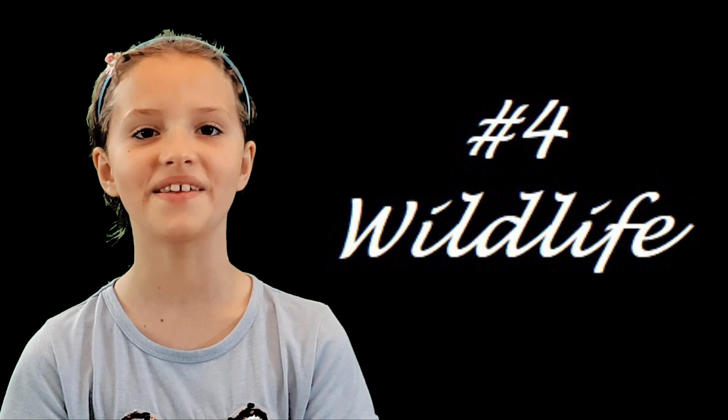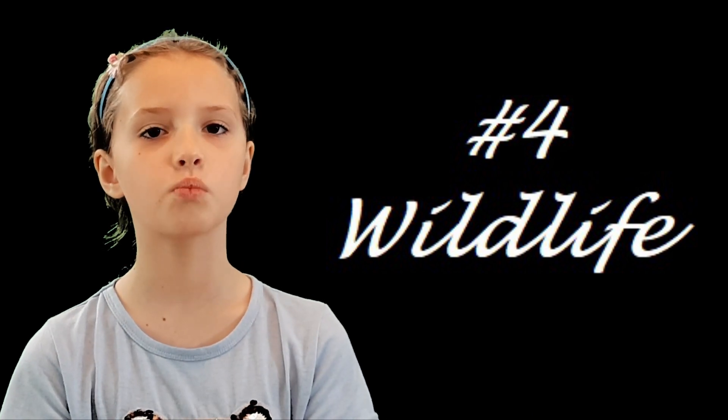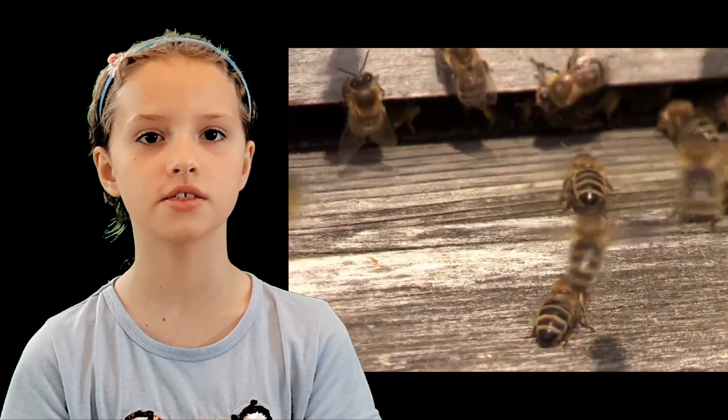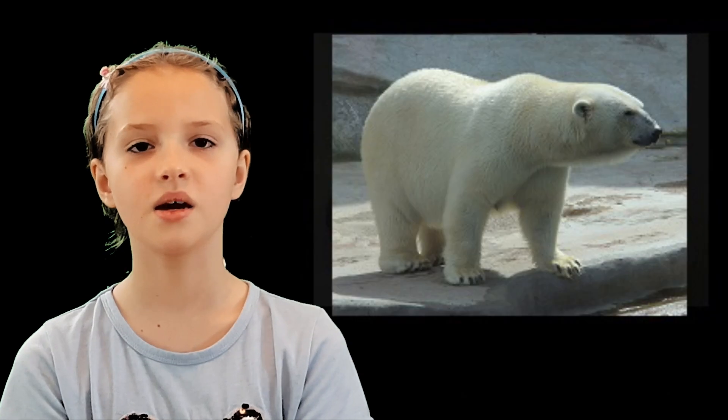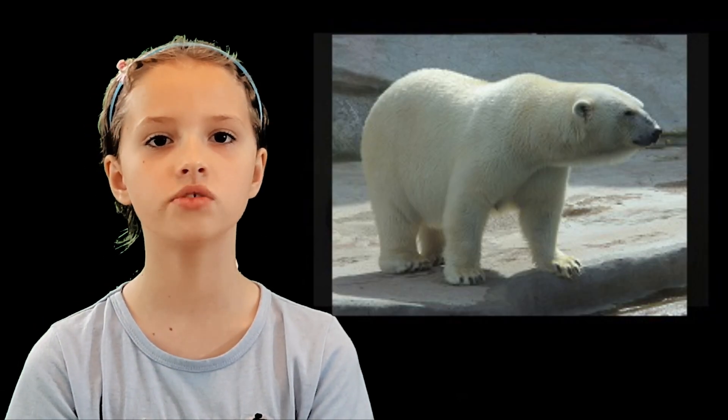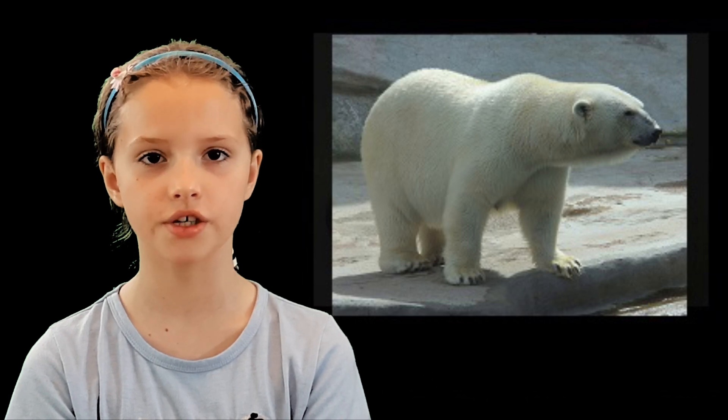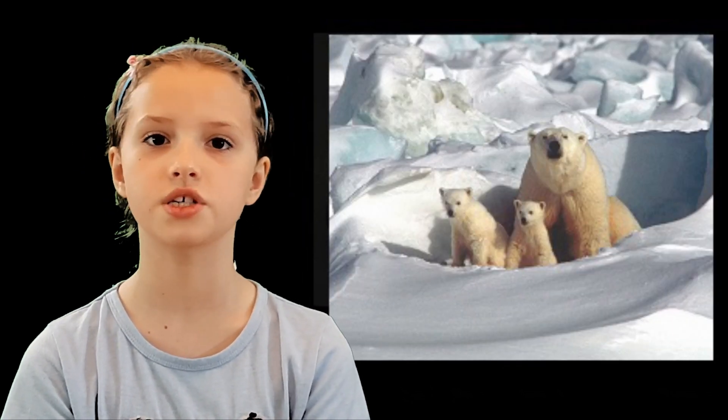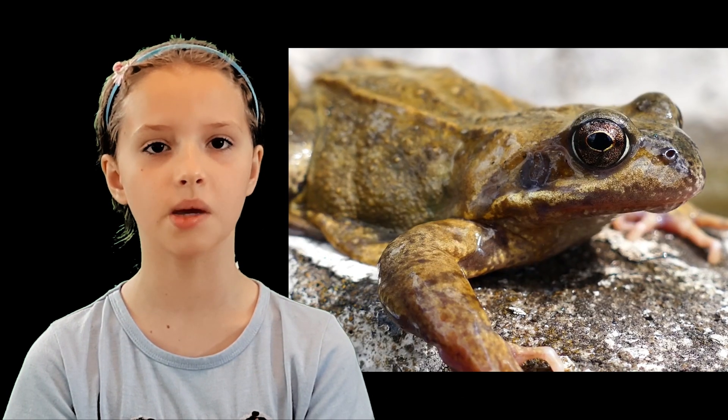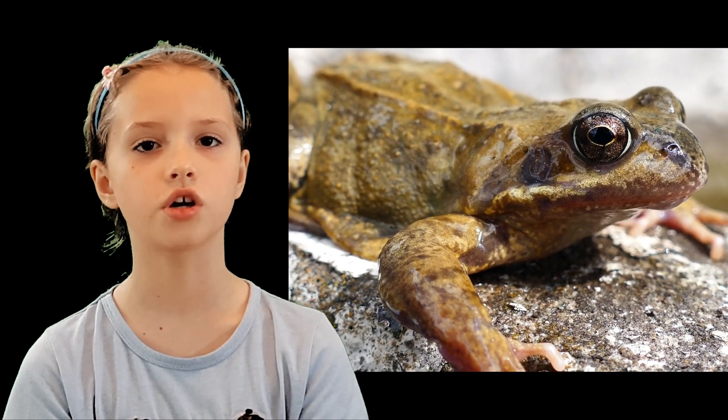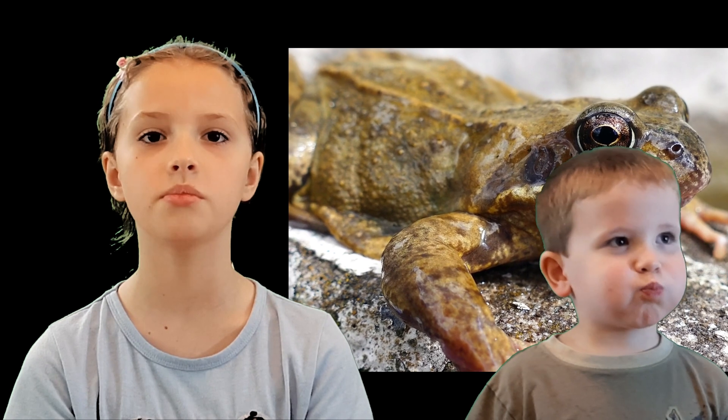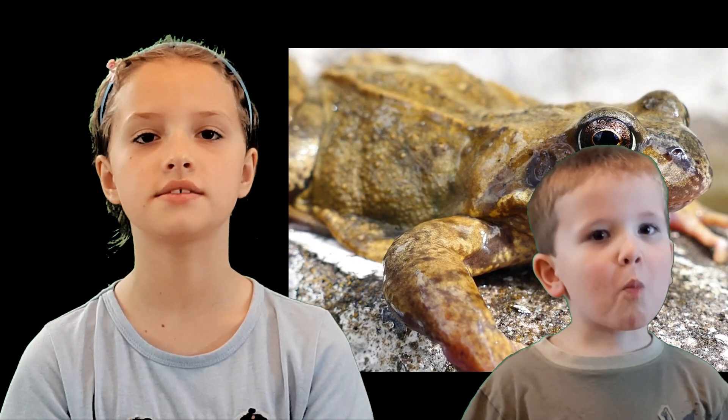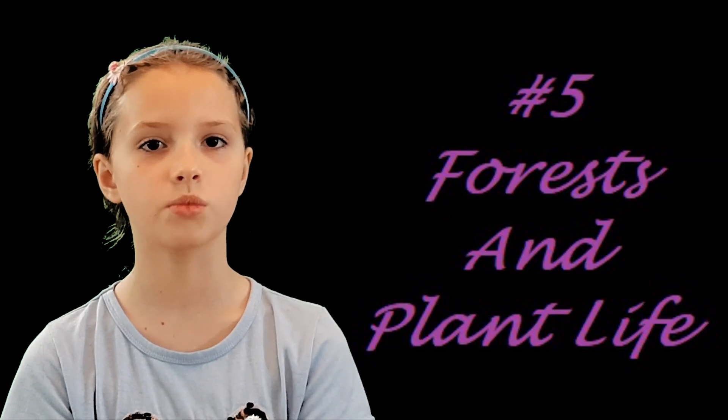Number four, wildlife. Every year more animals are added to the list of endangered species. Polar bears have become the poster child of those animals affected by climate change. The solution? If we can cut down on the rate of climate change, some animals will be able to adapt. Also, certain areas of the world can be set aside as designated areas for endangered animals.